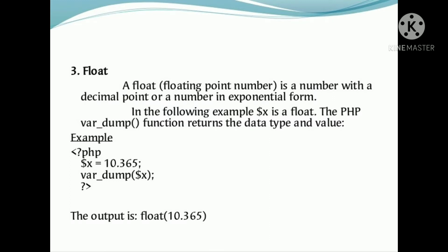Next is float. A float is a number with a decimal point or a number in exponential form. When we have decimal point numbers, we use the float data type. For example, the variable $x assigned 10.365. Using var_dump, we can verify that the variable type will be float.